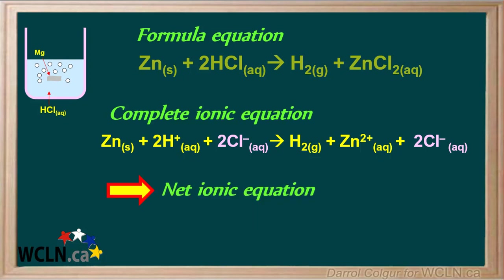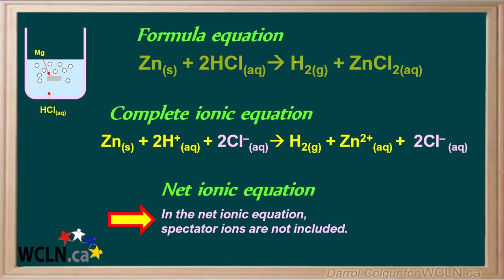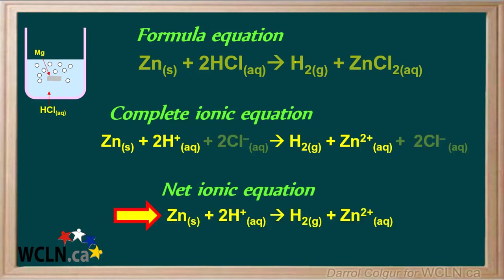This leads us to the net ionic equation. To write the net ionic equation, we just write the complete ionic equation and leave out any spectator ions. So in the net ionic equation, all the species in the complete ionic equation are included, and the spectator ions — 2 Cl⁻ — are left out.